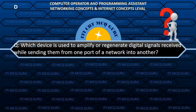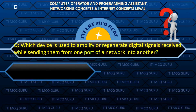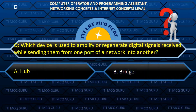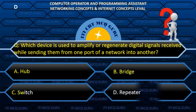Which device is used to amplify or regenerate digital signals received while sending them from one port of a network into another? D. Repeater.